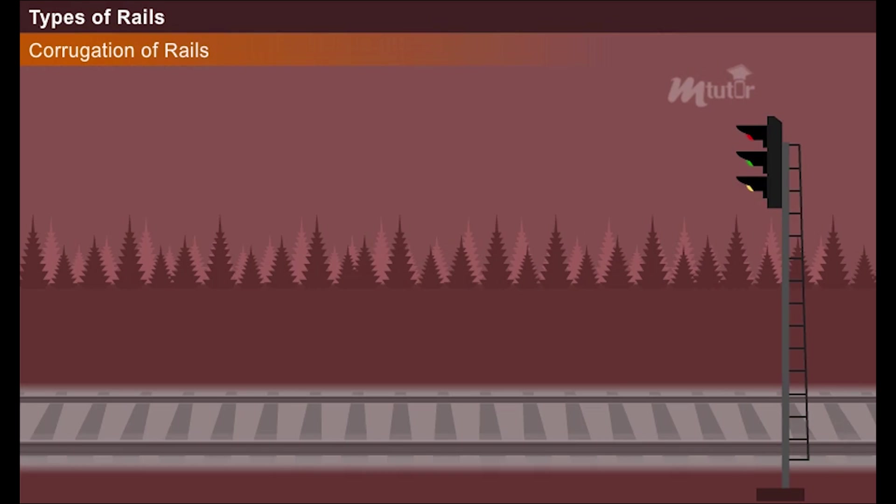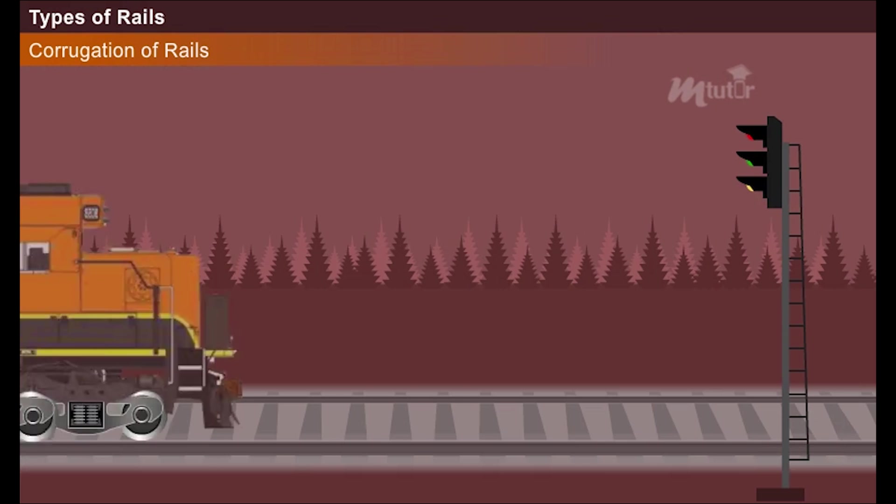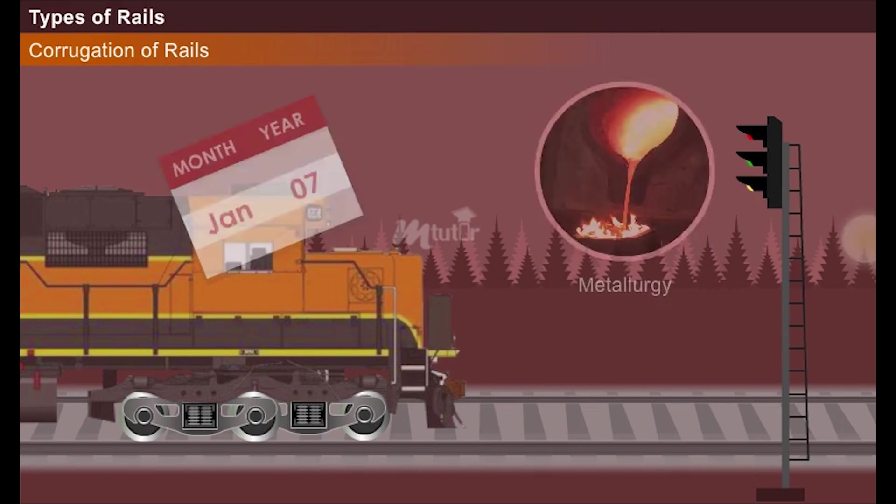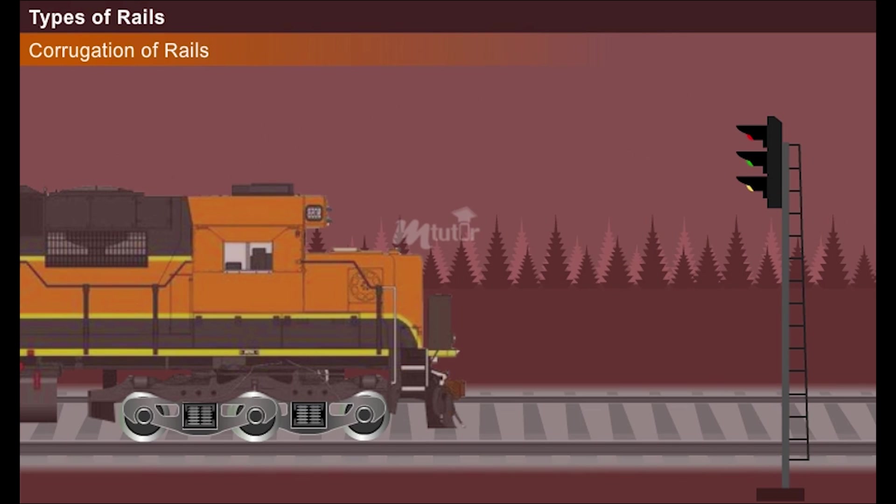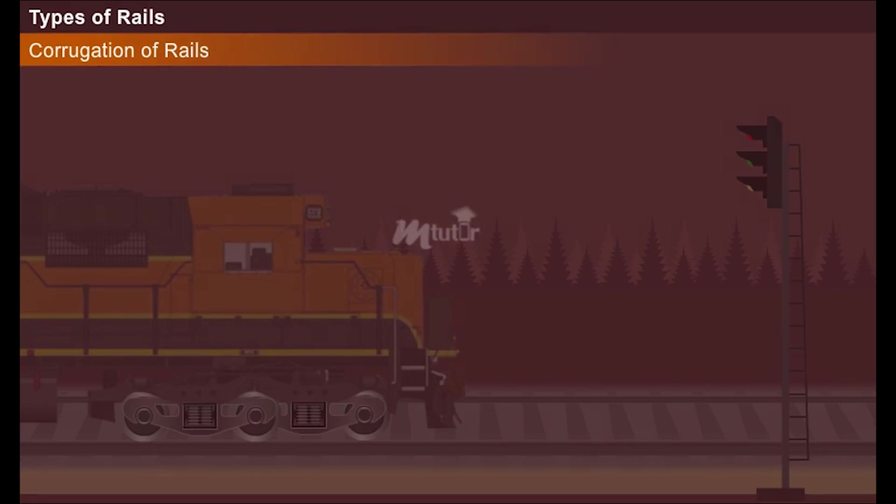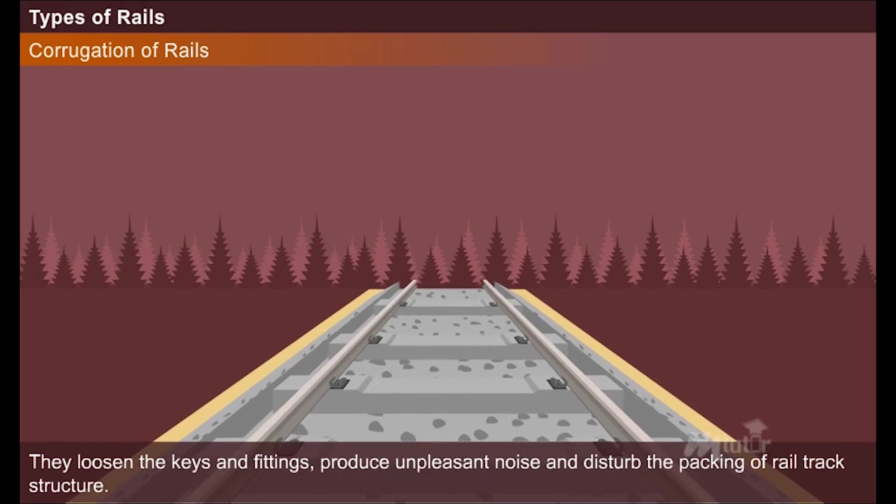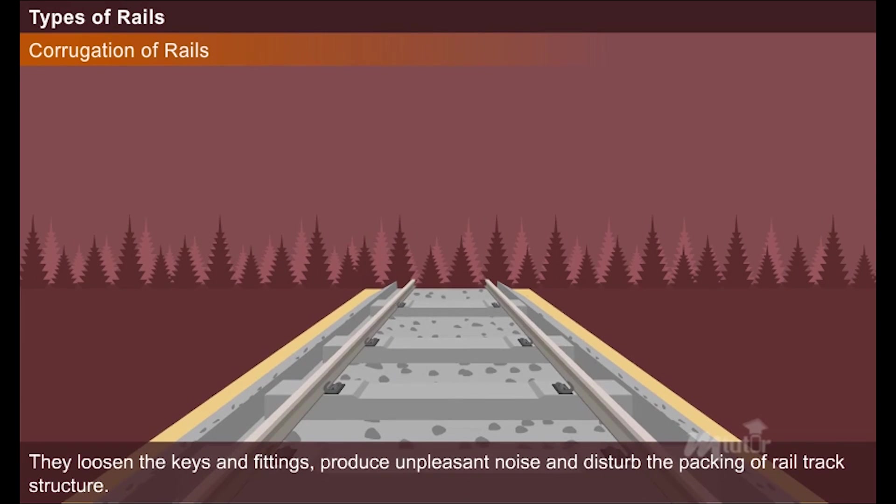These corrugations are formed by various factors such as train operations, metallurgy, the age of rails, environmental conditions, presence of sand, etc. They loosen the keys and fittings, produce unpleasant noise, and disturb the packing of rail track structure.